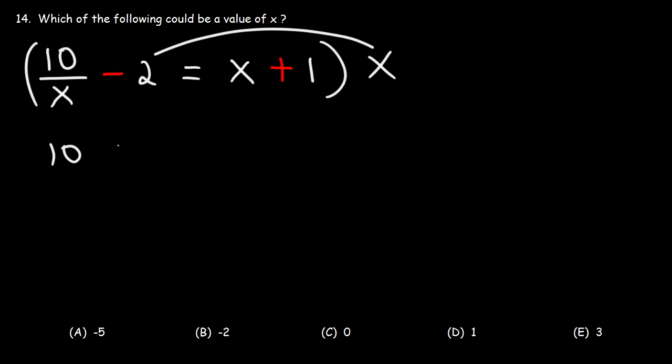x times negative 2 is negative 2x. And then x times x is x squared. x times 1 is x. So this is what we have.